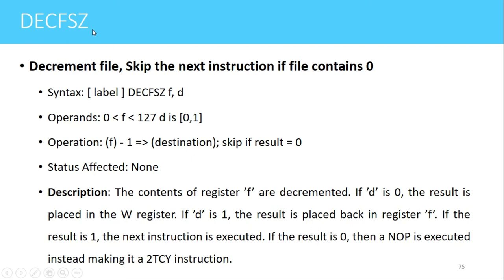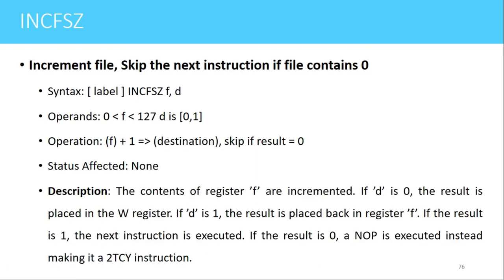The next instruction is DECFSZ, which stands for Decrement File and Skip the next instruction if the file register contains zero. The syntax is DECFSZ f, d — where f is the file register and d is the destination bit. The contents of the file register are decremented by 1, then checked whether they equal zero. If the result is not zero, the next instruction executes normally and execution continues.